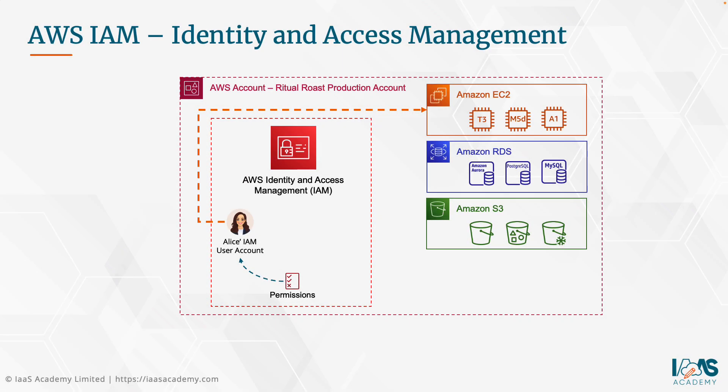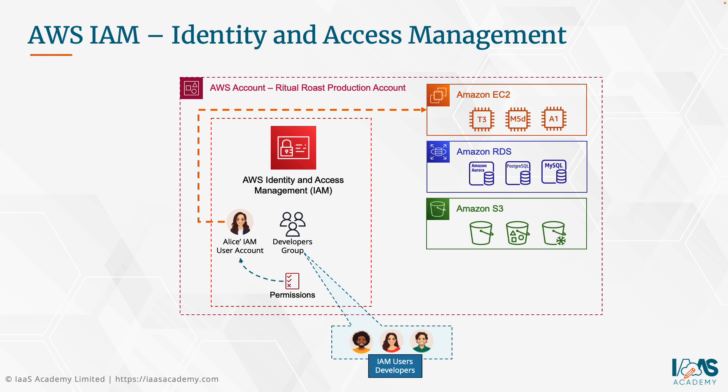As well as creating IAM users, you can also create IAM groups. IAM groups allow you to club together users that share a common job function — for example, developers, database administrators, or systems administrators. When you create IAM groups, you can assign permissions to the group, and the users that are members of that group will inherit those permissions. This allows you to follow the principle of least privilege, ensuring members are permitted only those permissions needed to carry out their job function.